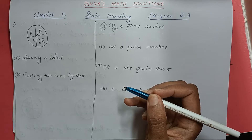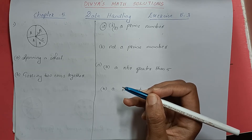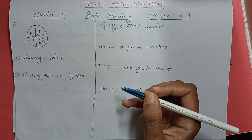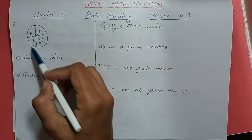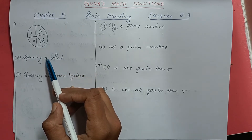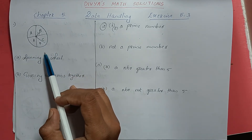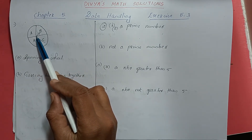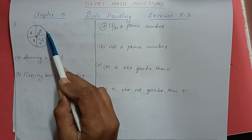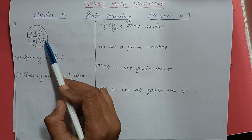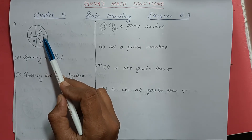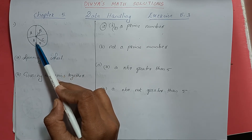Question number 1: List the outcomes you can see in this experiment. For the first experiment, we need to write only the outcomes. The experiment is spinning a wheel. What are the outcomes we can see? Here we will get the letters A, B, C, D.